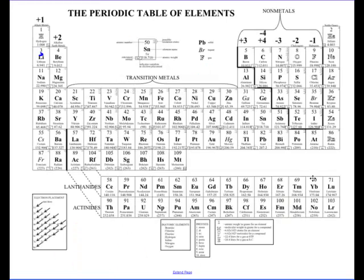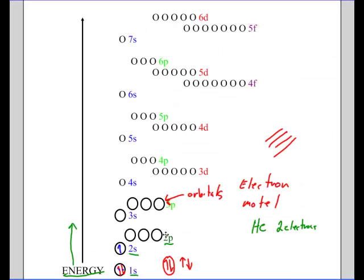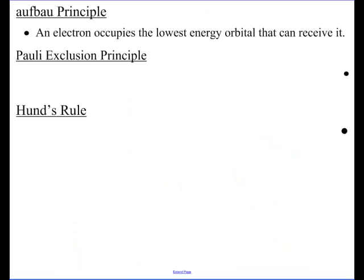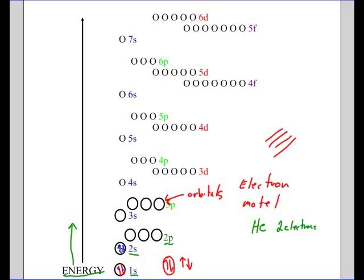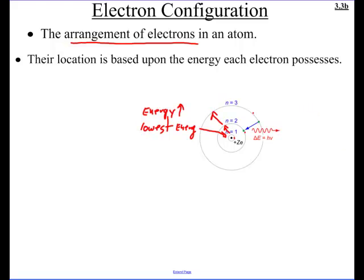What about the next element, beryllium? It has four electrons. The fourth electron goes right into the 2s, pairing up with the third. Now you might wonder why not spread them across different orbitals — remember, we have to put electrons in the lowest energy orbital available to them. But why only two electrons per orbital? That brings us to the Pauli Exclusion Principle.